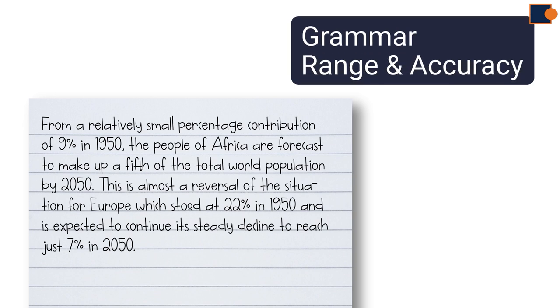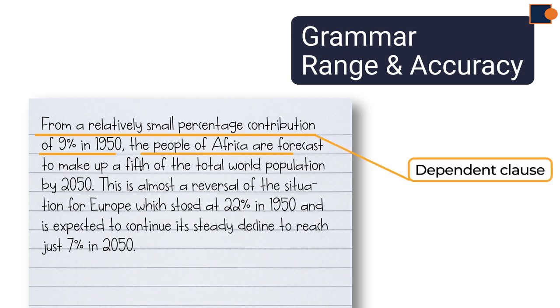Finally, in terms of grammar range and accuracy, there are use of complex sentences with dependent and independent clauses. For instance, from a relatively small contribution of 9% in 1950 is dependent clause, the people of Africa are forecast to make up a fifth of total world population is independent clause.